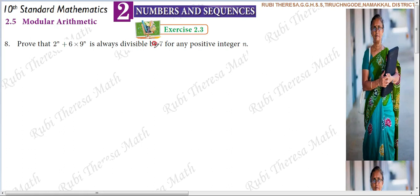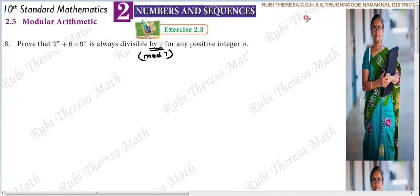So, divisible by 7. We take mod 7. The mod value is fixed as our divisor. So mod 7 — if you need to get a dividend, you need to get an exact number dividend, not like 5x or 3x where you solve for the value of x.